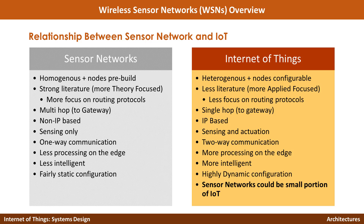Sensor networks are fairly static in configuration. For example, if you deploy in a field for agriculture, air quality monitoring, or to detect bat movements in a cave, you just deploy them and that is it — you are not going to change anything most of the time. But in IoT, the focus is on highly dynamic environments where mobility is key and requirements change. For example, in precision agriculture you might want to increase the sampling rate when a certain event happens — such as when it starts snowing — to get fine-grained data. There is a lot of dynamically changing behavior in the IoT space.